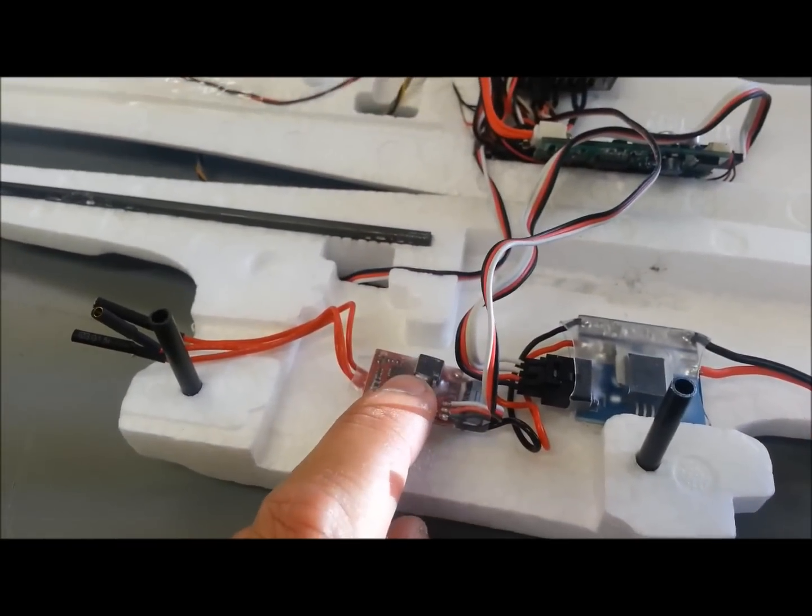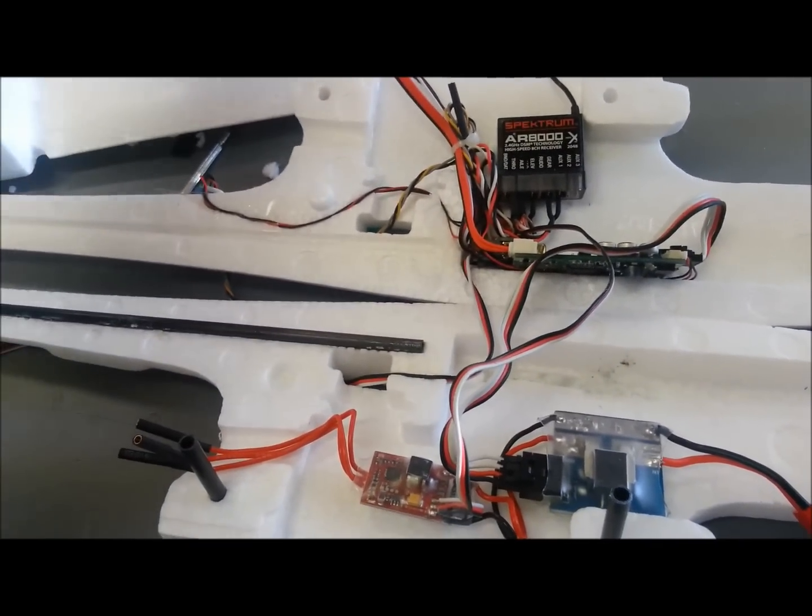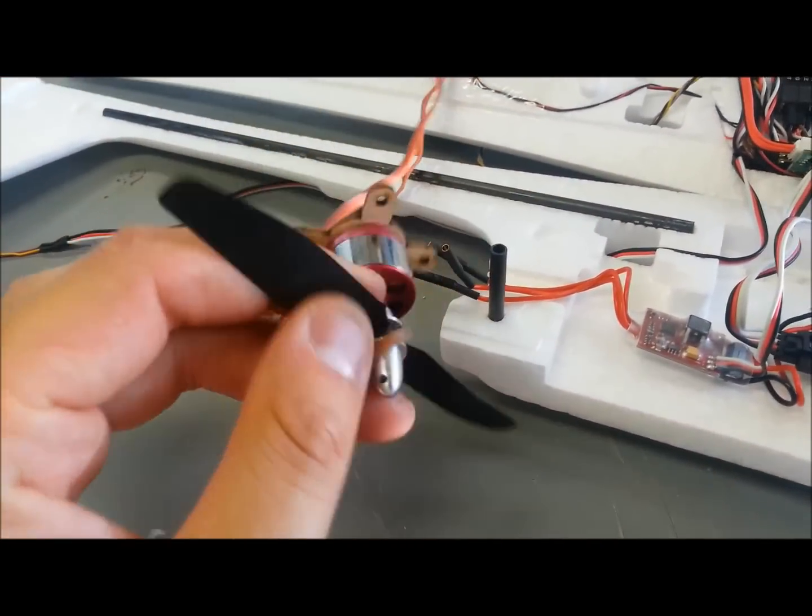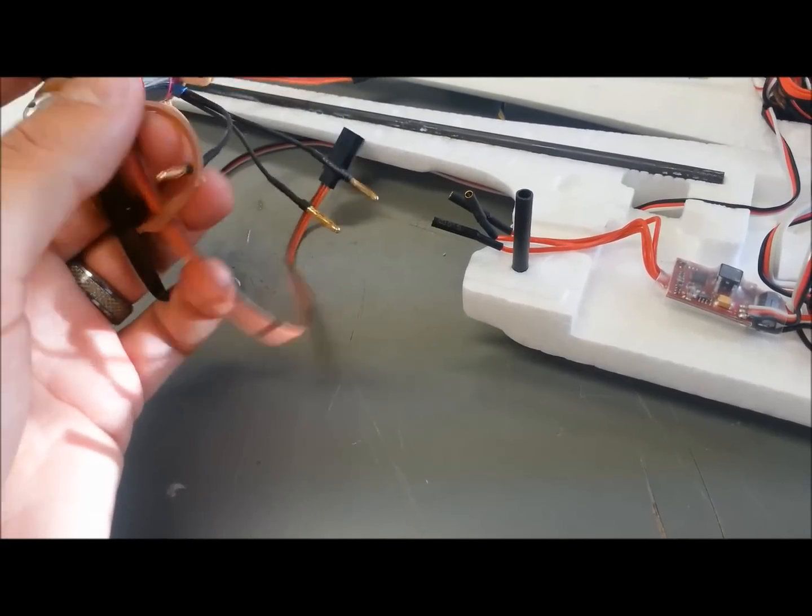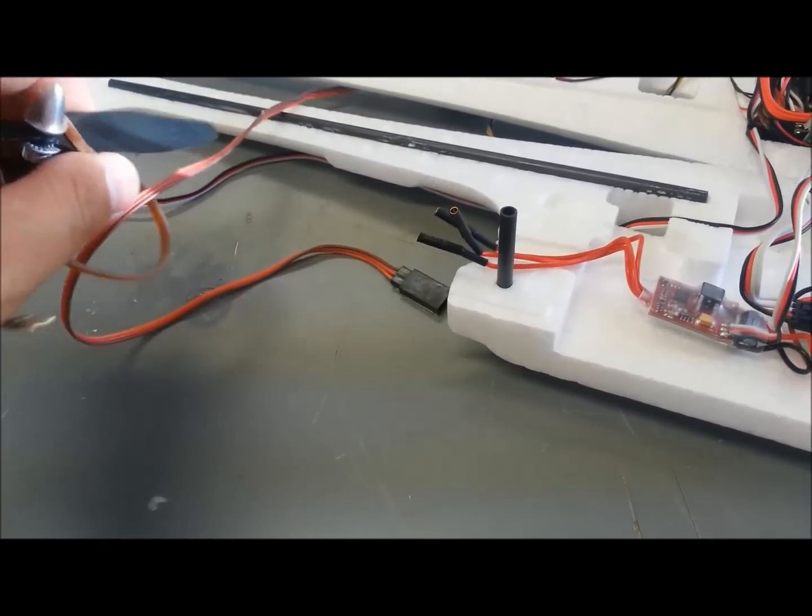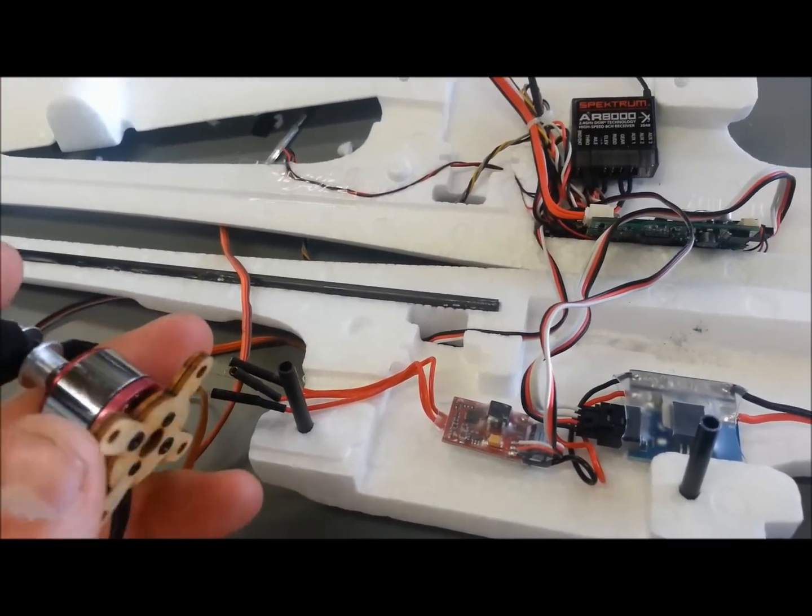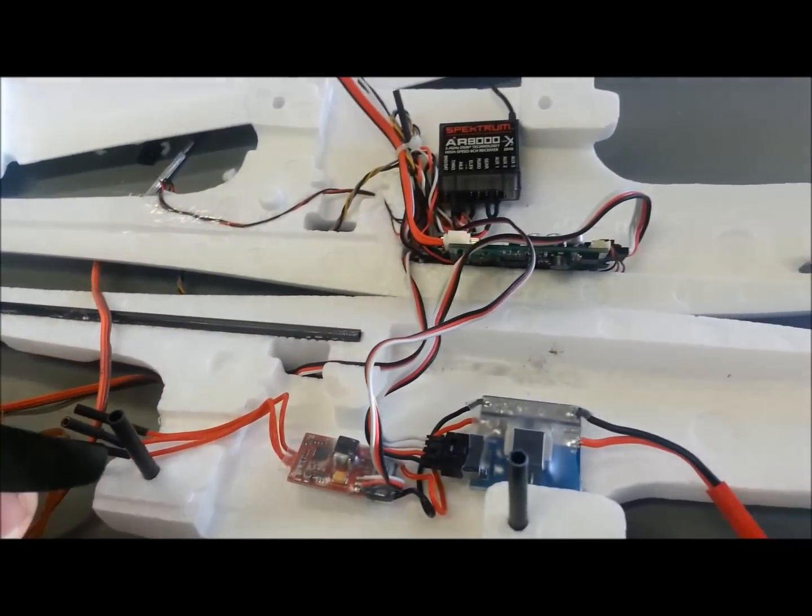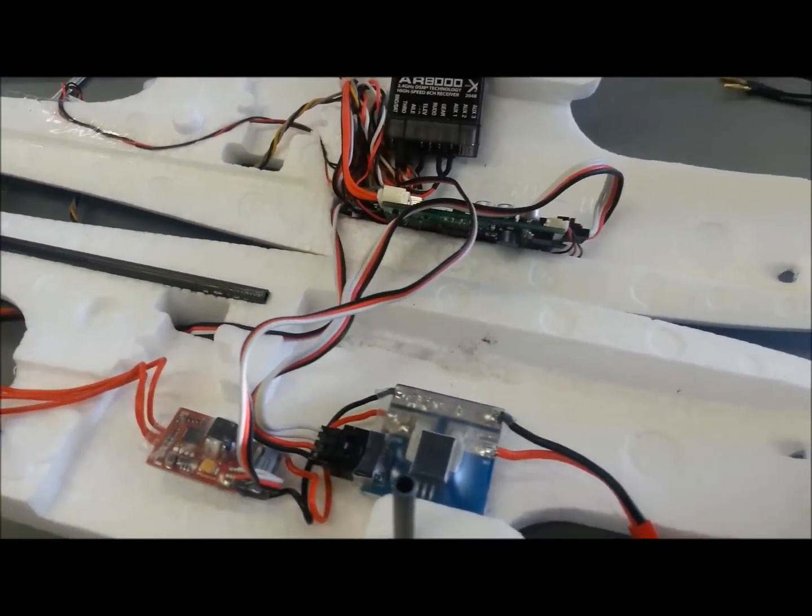I'm running the Turnigy Plush 12 Amp ESC to run my 2200 kV brushless outrunner motor. I did an amp draw with the setup and the 5x3 prop and I was pulling close to 6 amps, which is pretty efficient. It had a pretty sufficient amount of thrust. I don't know how much power I'm going to have with this platform, but it definitely will be a challenge.